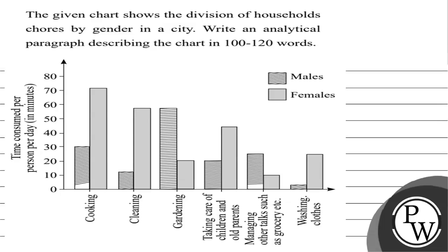Hello, let's read this question. The given chart shows the division of household chores by gender in a city. Write an analytical paragraph describing the chart in 100 to 120 words.